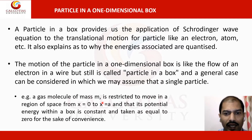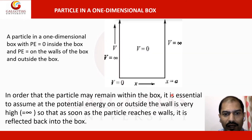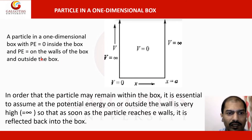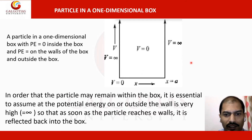The potential energy within the box is taken as zero for convenience. Outside the box the potential energy is taken as infinite. So between x = 0 and x = a the particle is restricted. Inside the box the potential energy is zero, and on the walls and outside the box the potential energy is infinite. This is essential to ensure the particle remains confined within the box.